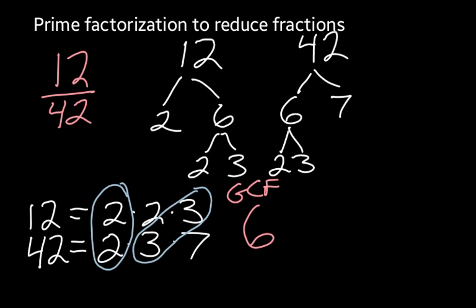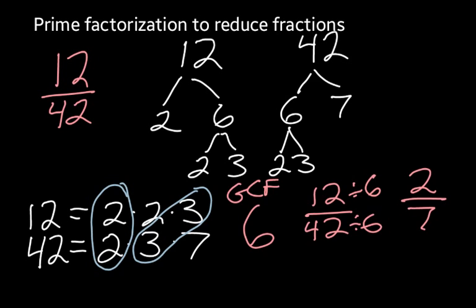What I want to do now is take 12 and 42, and divide each of them by 6. Well 12 divided by 6 is 2, and 42 divided by 6 is 7. So our fraction reduced to lowest terms is 2 7ths.